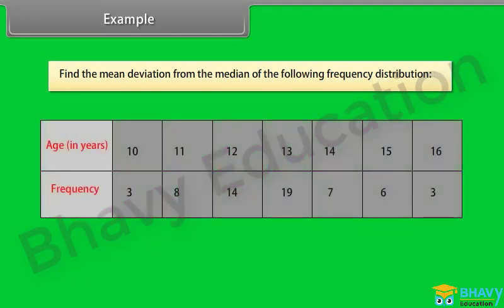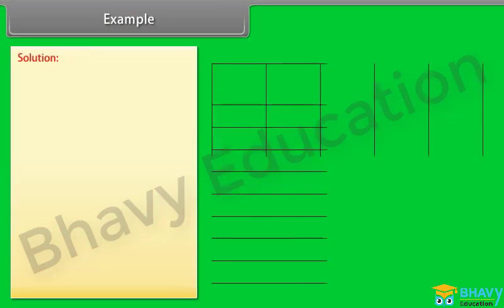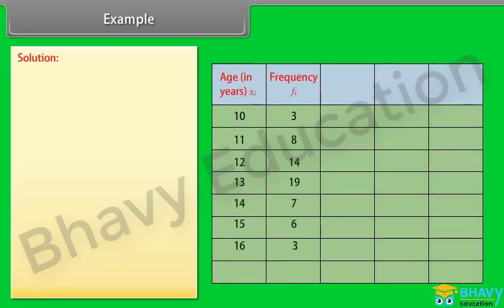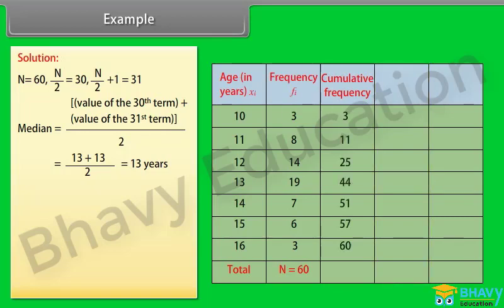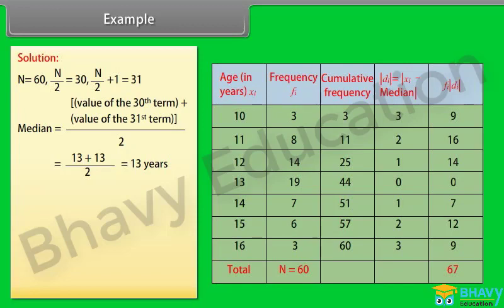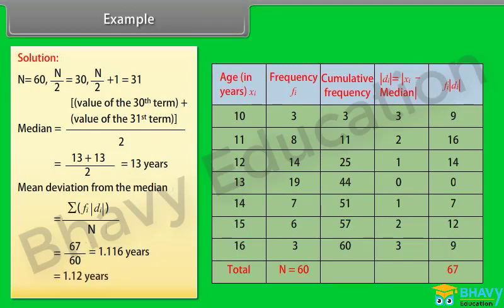Example: Find the mean deviation from the median of the following frequency distribution. The sum of frequency fi is 60. The median of the given distribution is found to be 13 years. In the third column we find the cumulative frequency. In the fourth column we find the absolute value of the difference between xi and median, denoted by di. The product of absolute values and frequency sums to 67. Finally, the mean deviation equals 1.12 years.